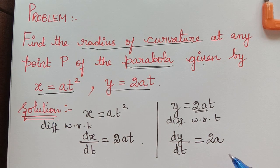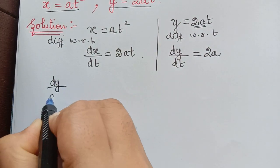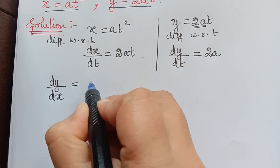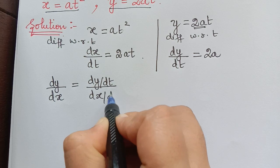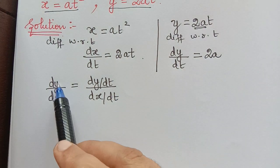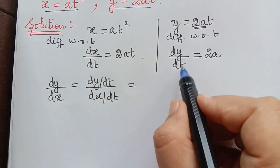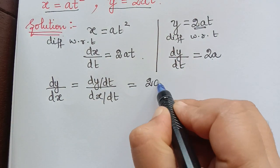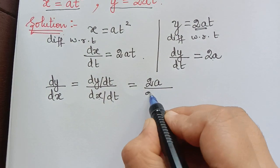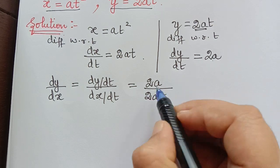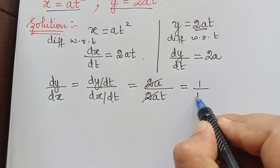Now using these two, we have to find dy/dx. For parametric equations, dy/dx is given by dy/dt divided by dx/dt. So that equals dy/dt which is 2a, divided by dx/dt which is 2at. These twos cancel, and we get dy/dx equal to 1/t.